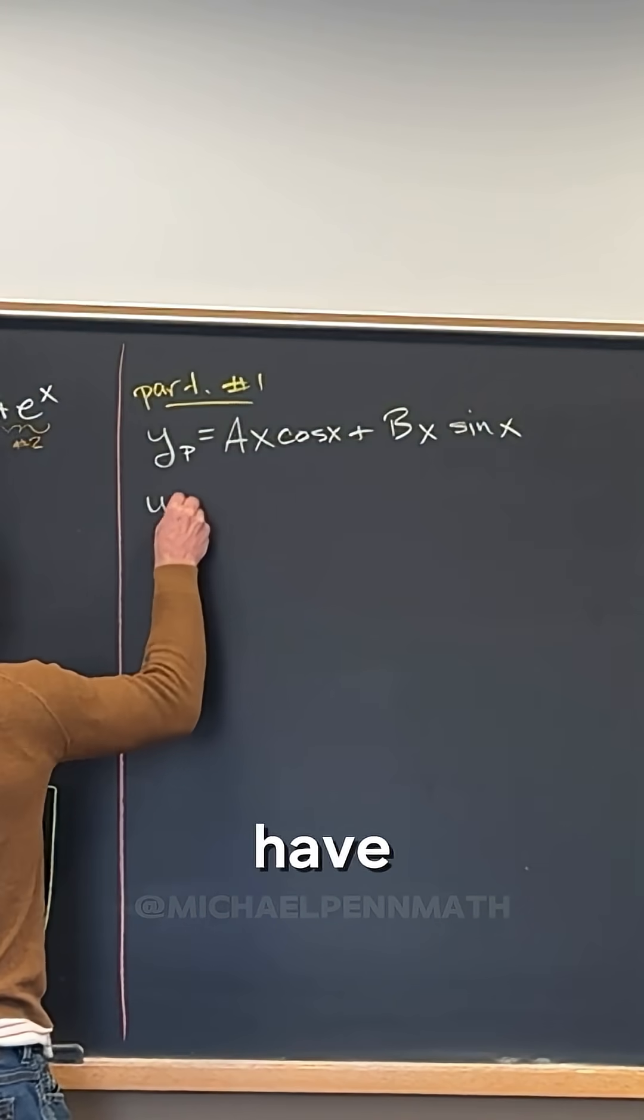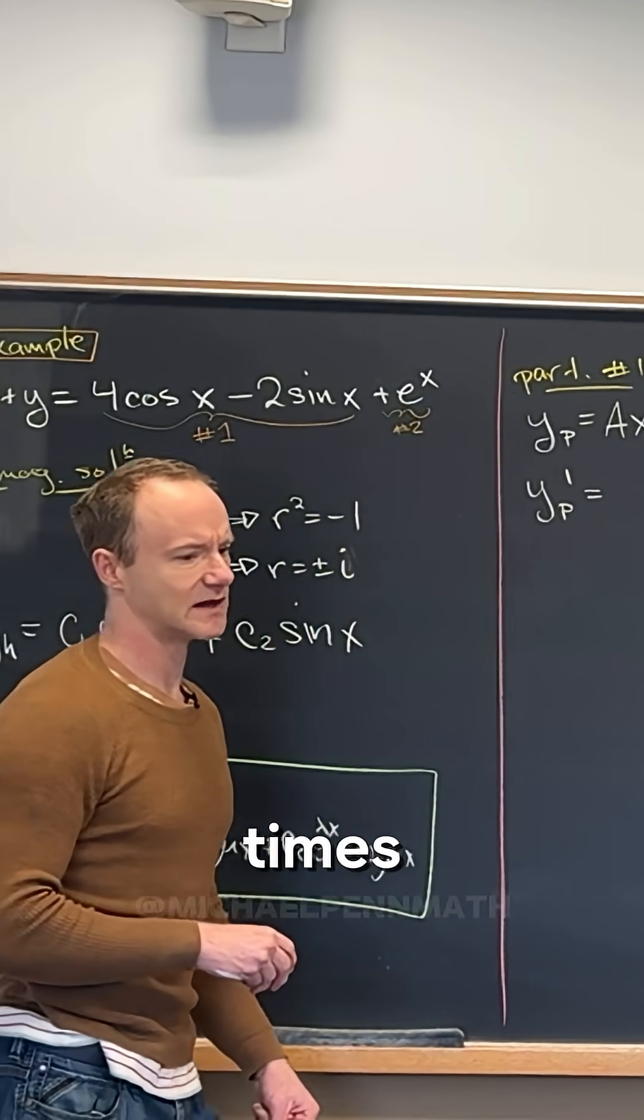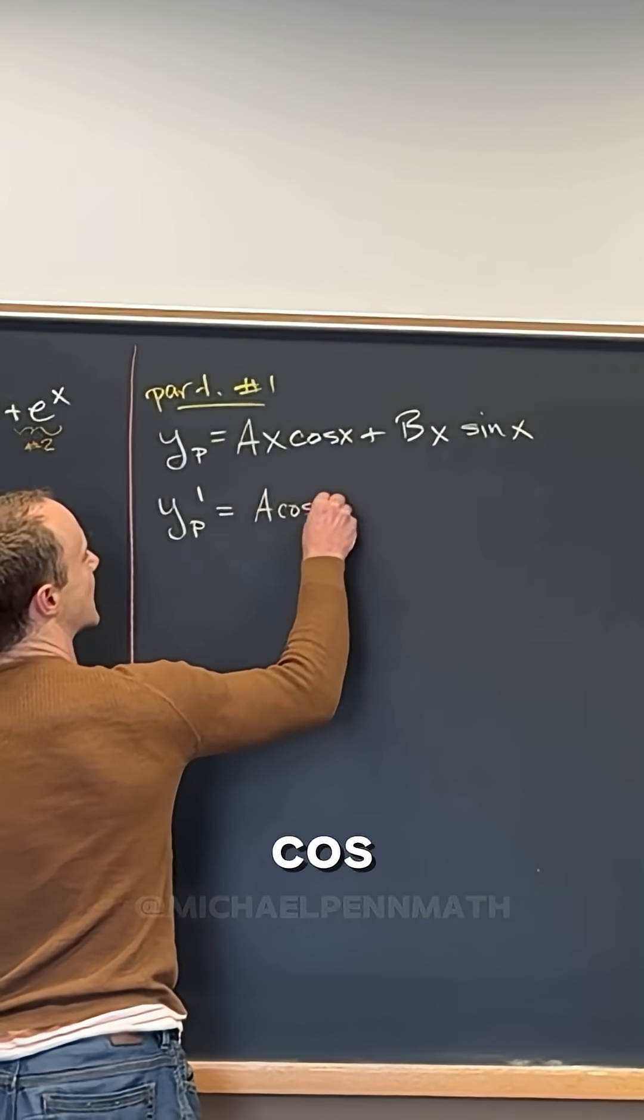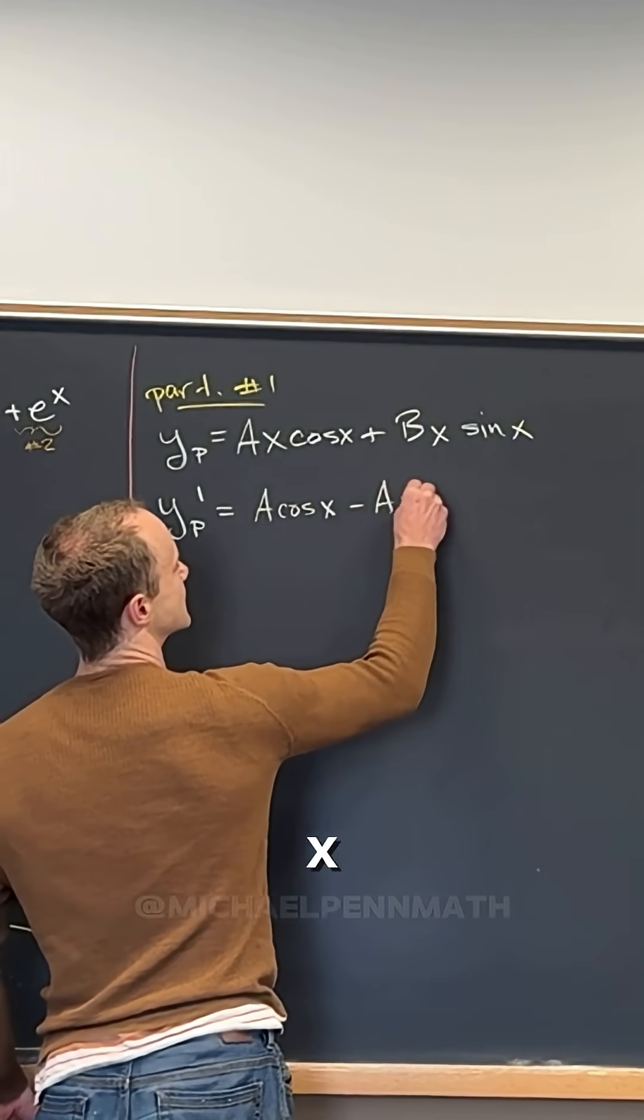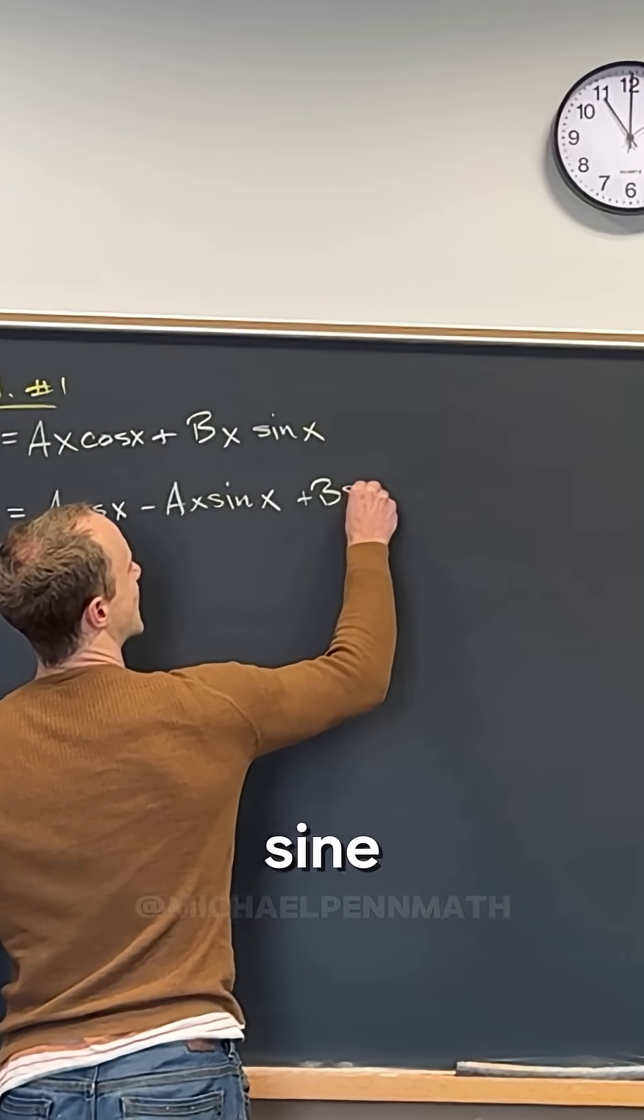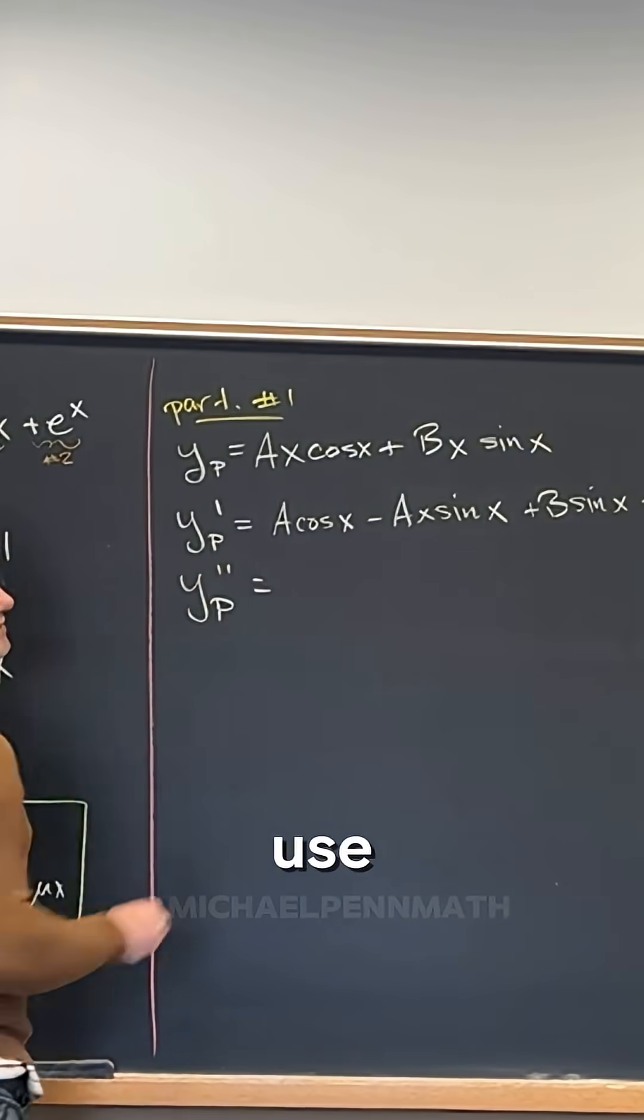We have yp prime. We're going to have to use the product rule both times here. This is going to be a cos x minus ax sine x, and then plus b sine x plus bx cos x. We just use the product rule there.